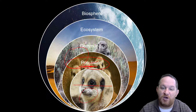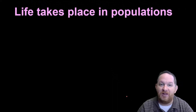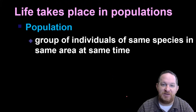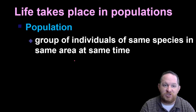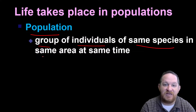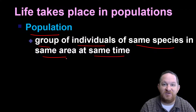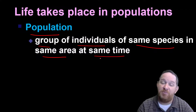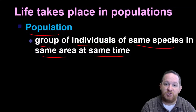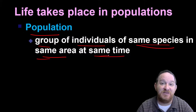The focus of this video will talk about how species interact within a population. Life takes place in these populations. Here's the formal definition of population: it's just a group of individuals of the same species — maybe meerkats — in the same area at the same time. So you've got some meerkats living in one desert; you might have some meerkats living in another desert — that's not the same population. Because to be a population, you've got to be the same species living in the same area at the same time.